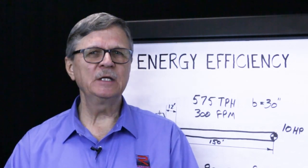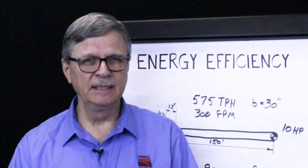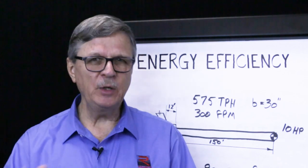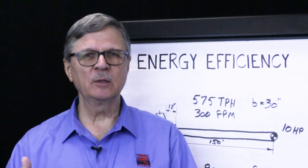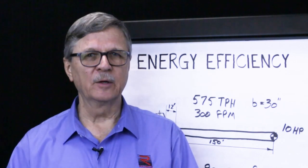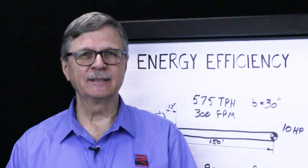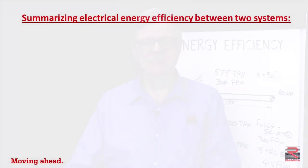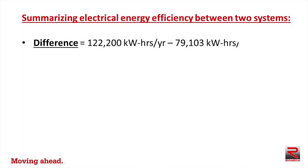In conclusion, we have shown that the faster belt speed with the shorter skirt has an energy efficiency advantage of thirty-five percent when compared with the fully skirted, slower conveyor. To calculate the difference in power consumption, we simply subtract 79,000 kilowatt hours per year from 122,000 kilowatt hours per year to arrive at a difference of 43,000 kilowatt hours per year.